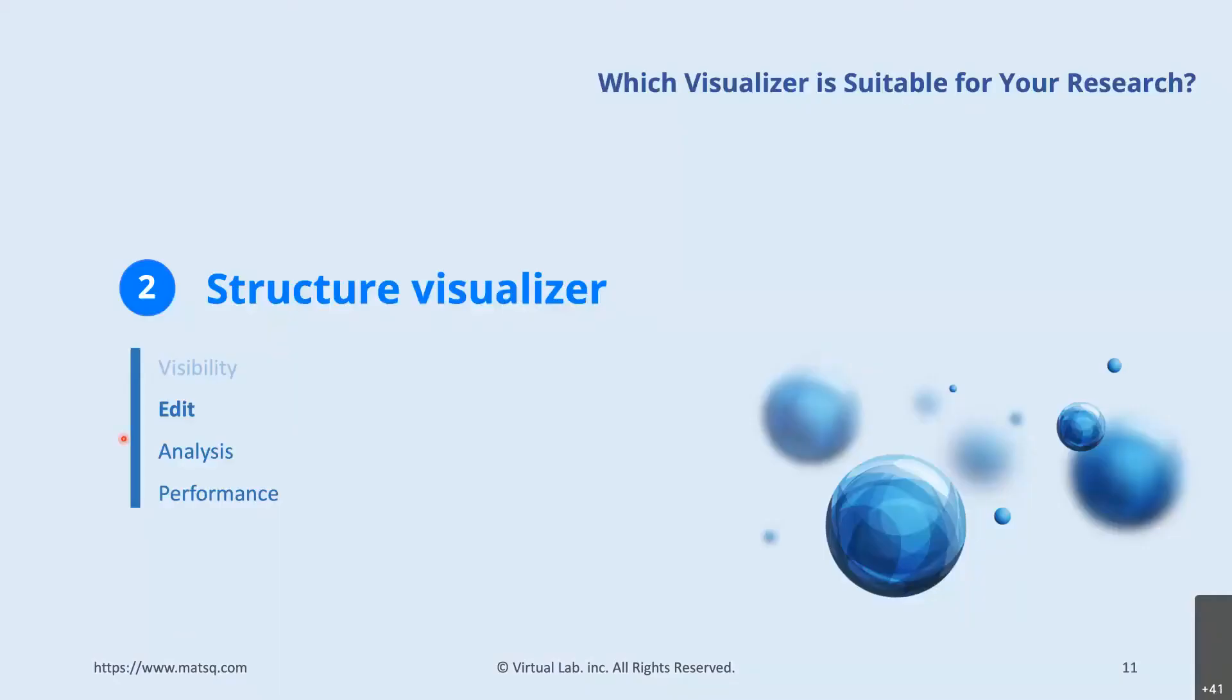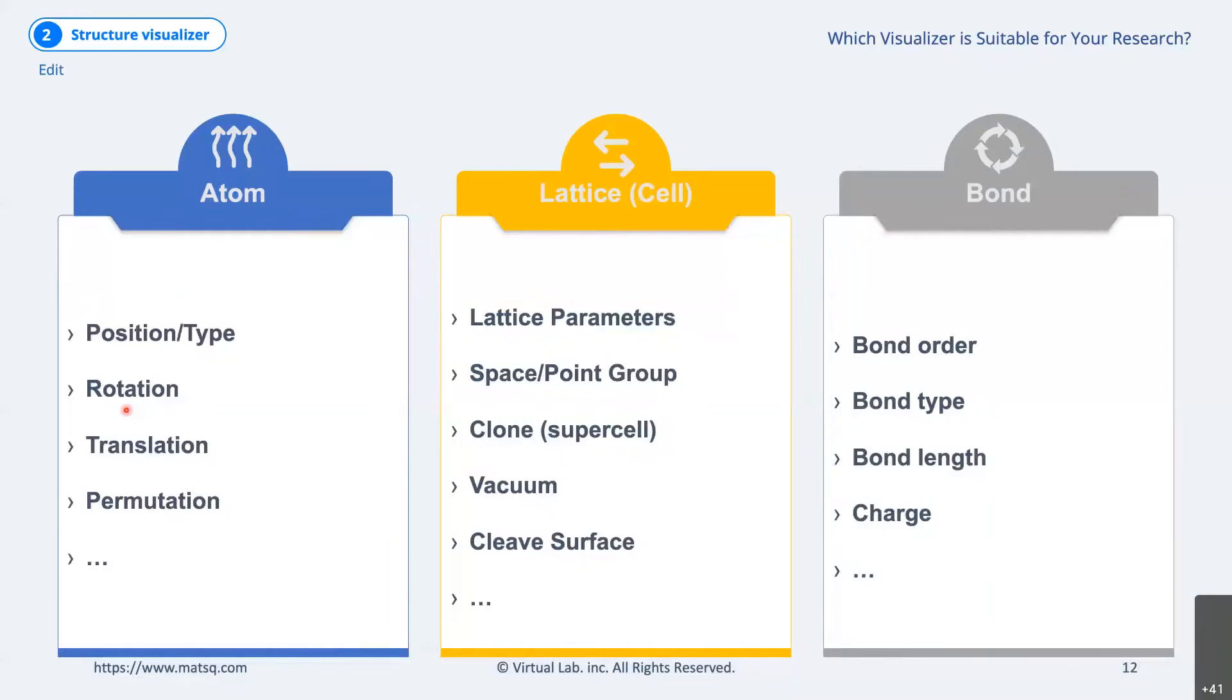Edit. Next, let's take a look at the functions related to structure generation, which are the most unknown but very important functions for simulation research in general. Atomic scale structure constructs can be divided into an atom, lattice, and bond.